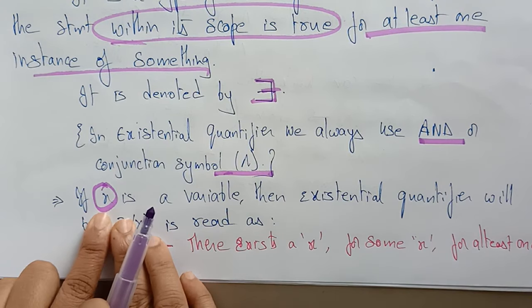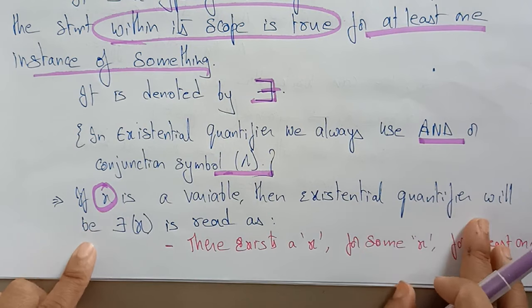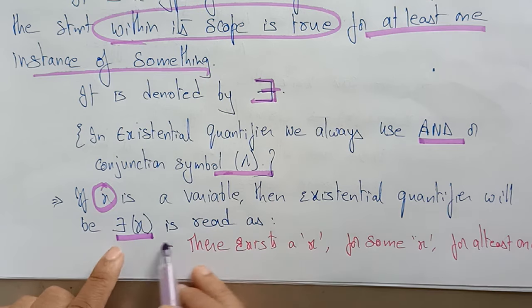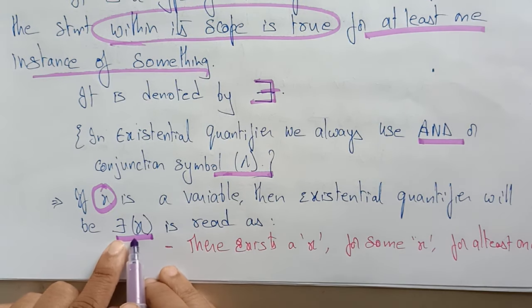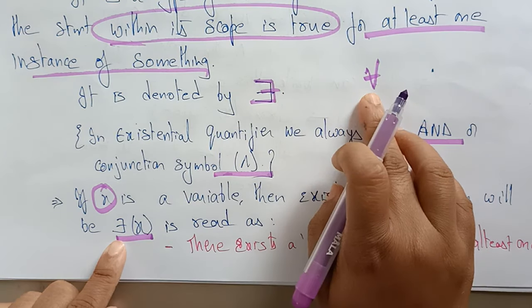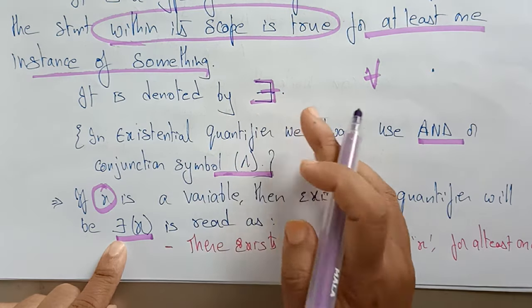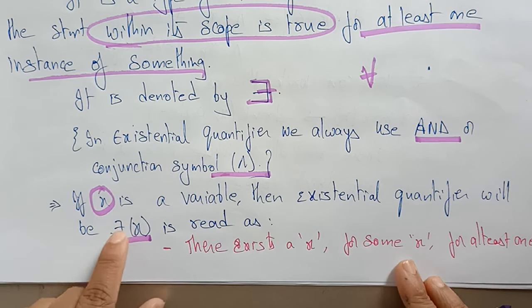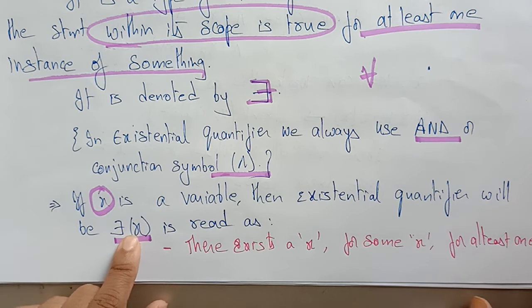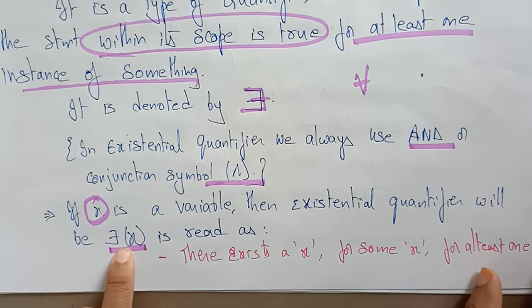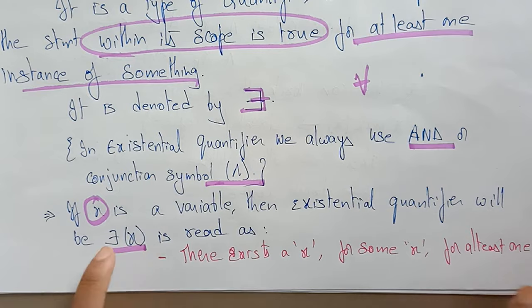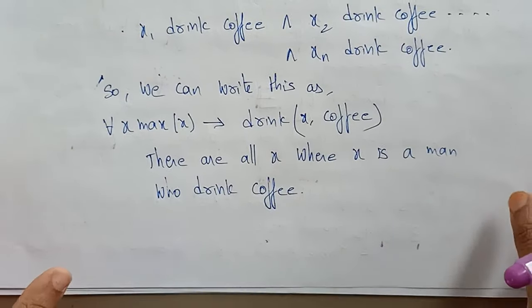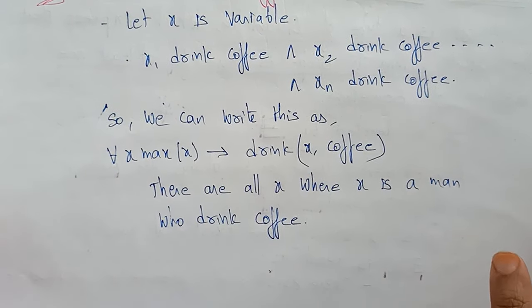If x is a variable, the existential quantifier is read as 'there exists x.' It can also be read as 'for some x' or 'for at least one x.' Whenever statements of this type appear, you represent the variable with the existential quantifier symbol meaning 'there exists x.'